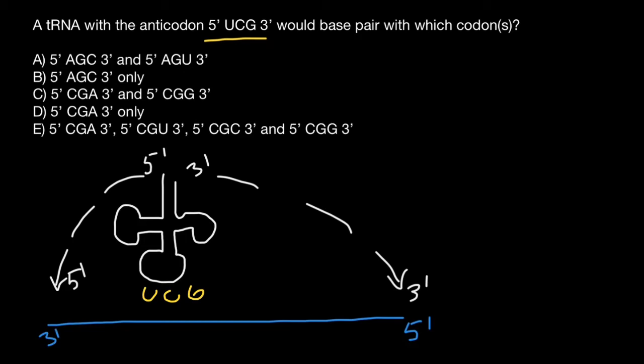Now we know that guanine base pairs with cytosine, cytosine with guanine, and in RNA, thymine or uracil base pairs with adenine. So this is going to be the sequence of the codon of the messenger RNA. So the sequence is going to be five prime end C, G, A, three prime end.